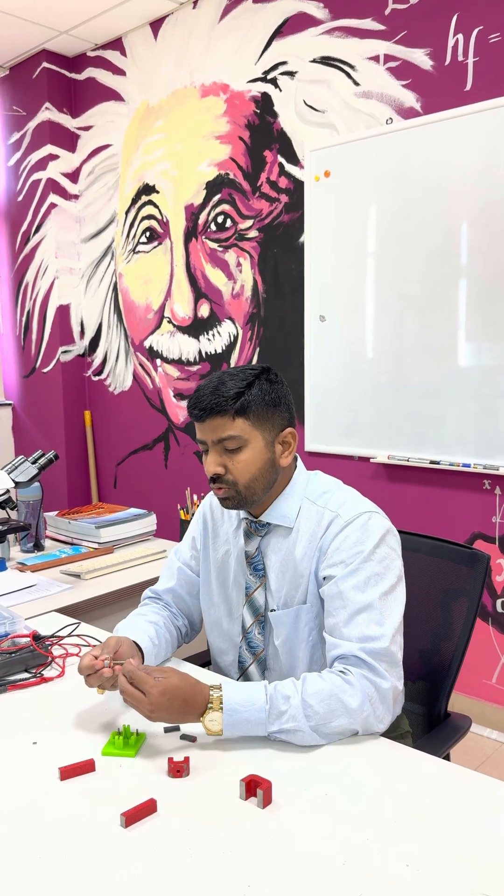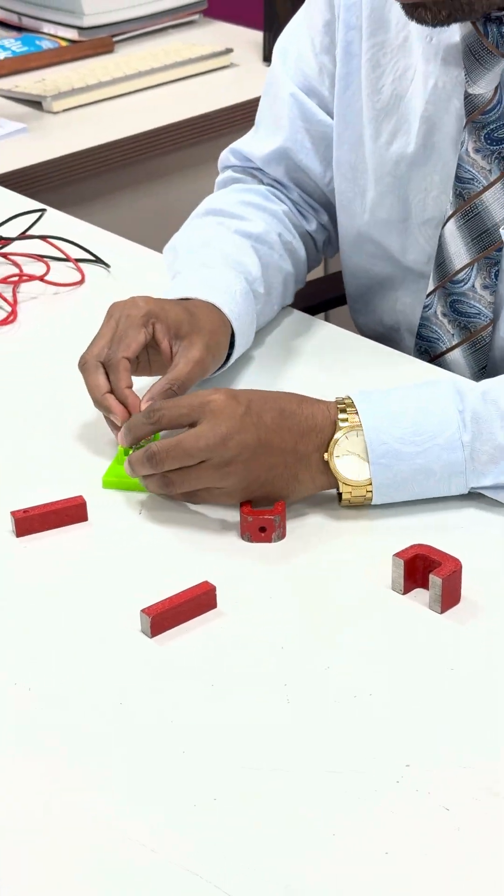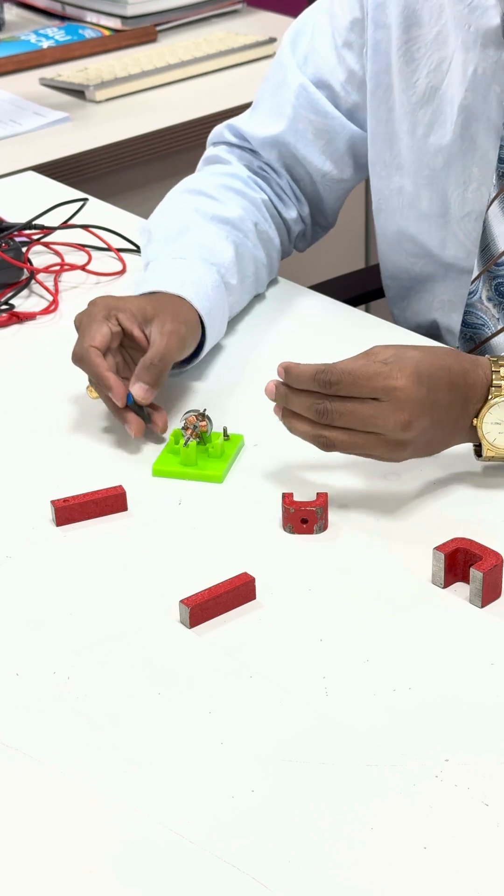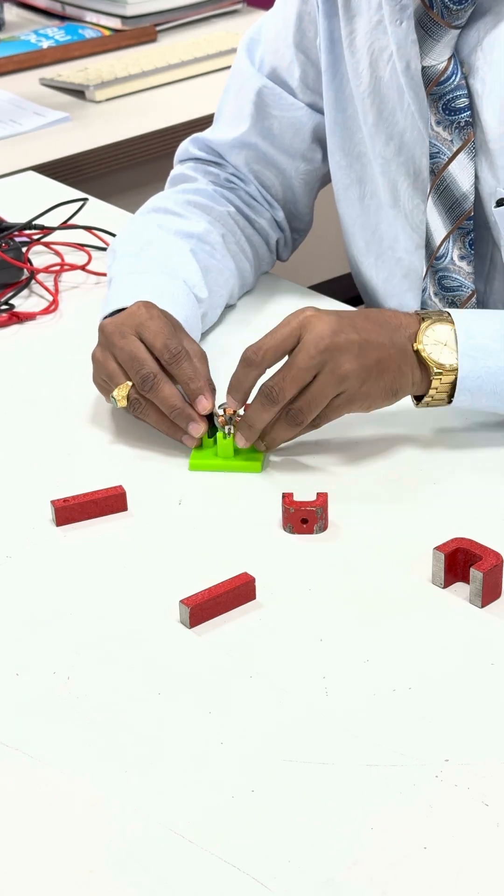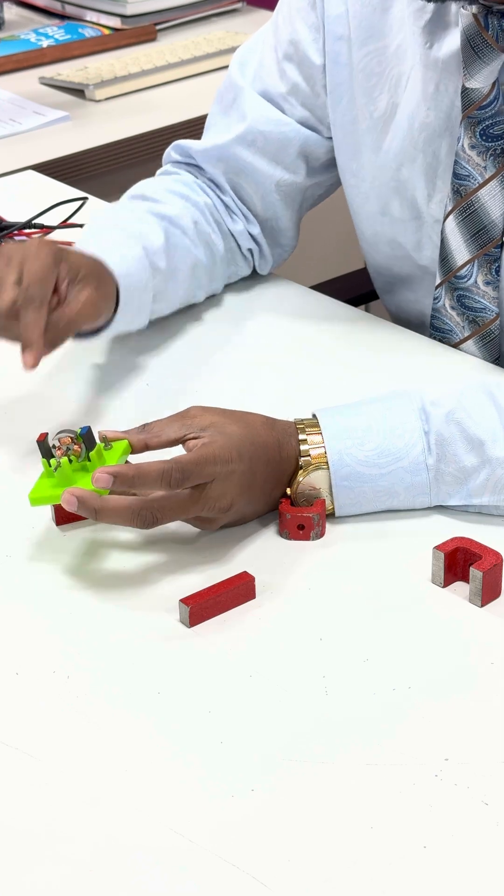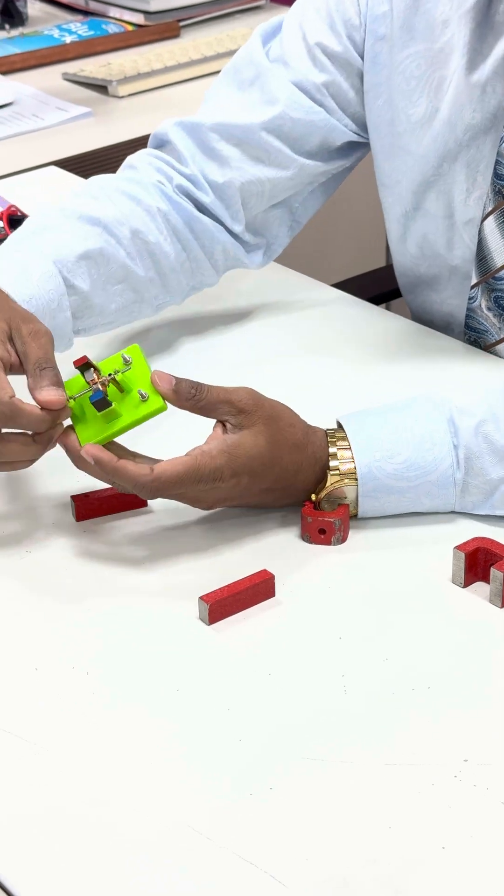So I will connect this one to this. I will keep these two magnets both the sides, North Pole and South Pole. So now this assembly is ready. So I kept the coil. Now this coil can rotate.